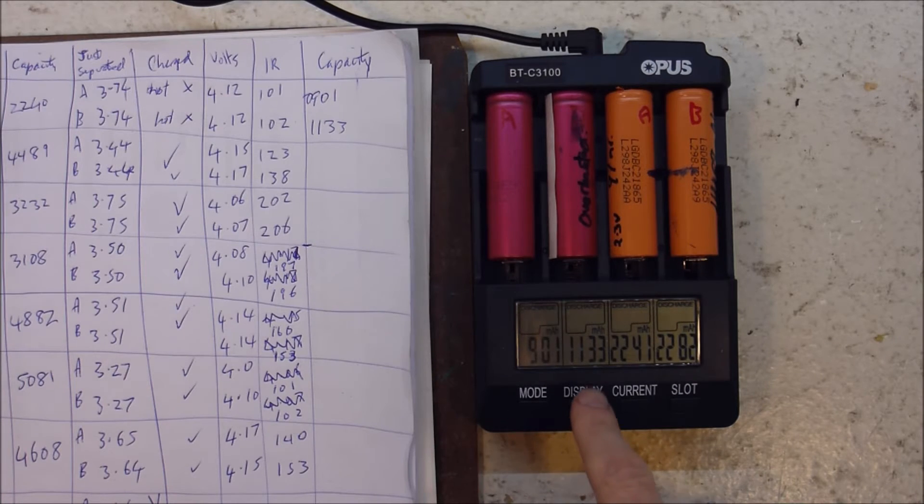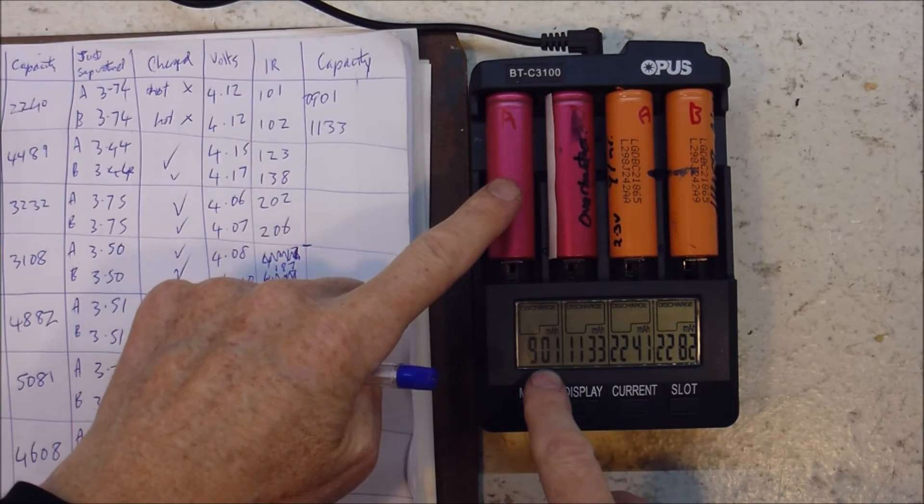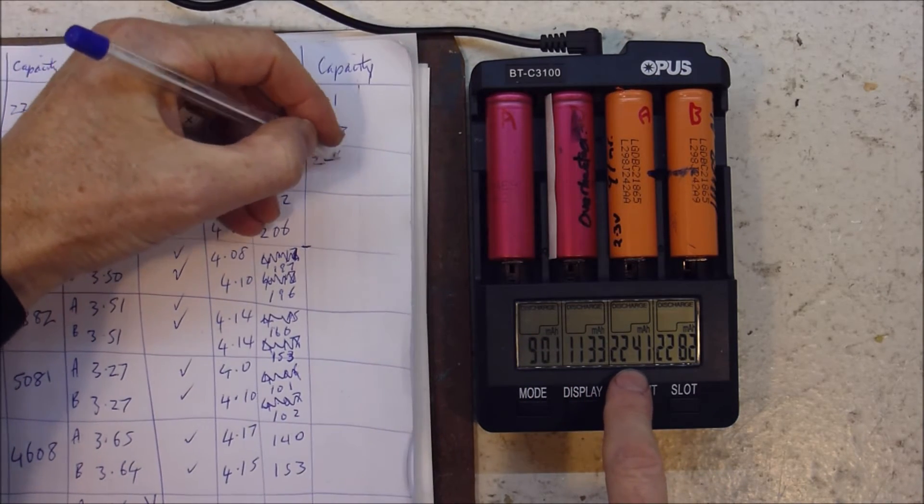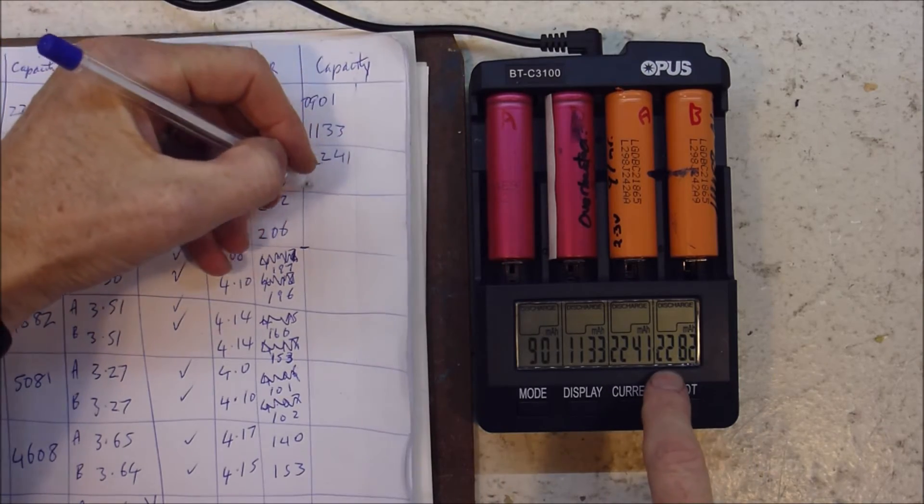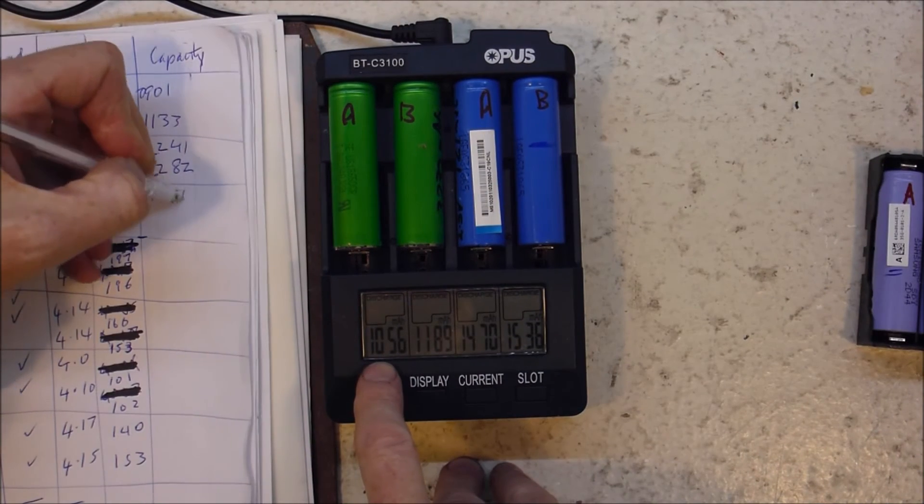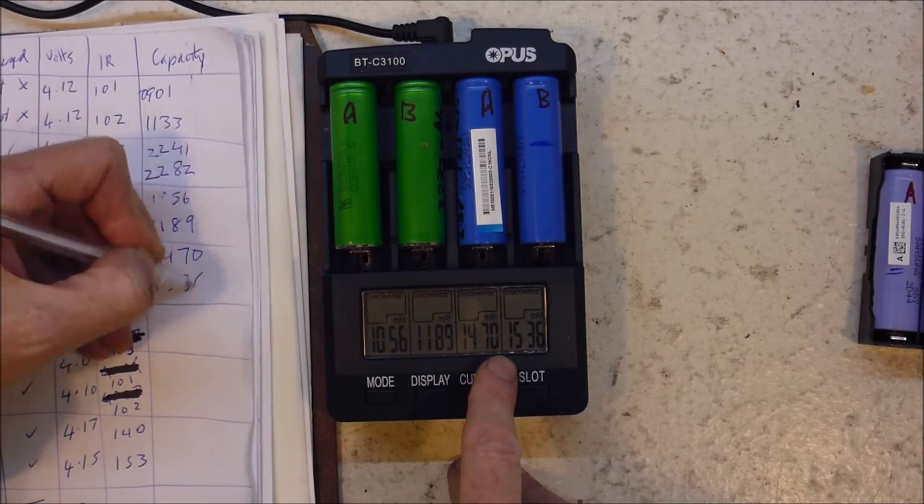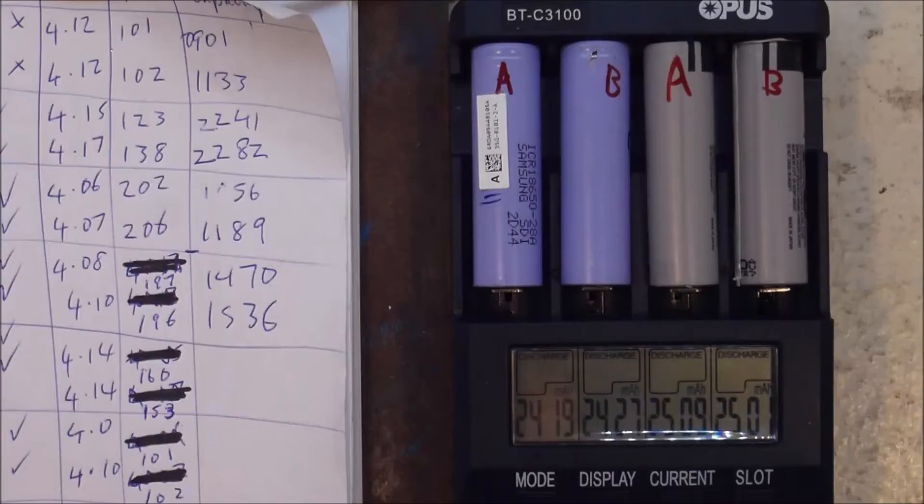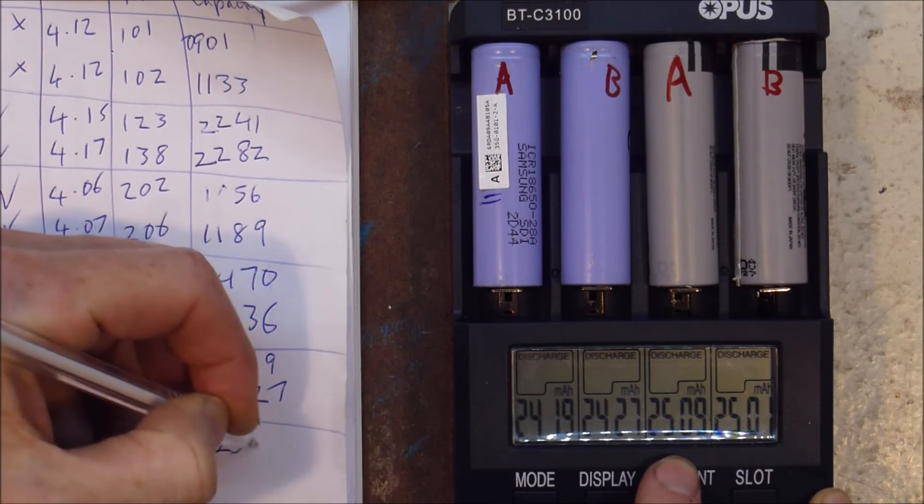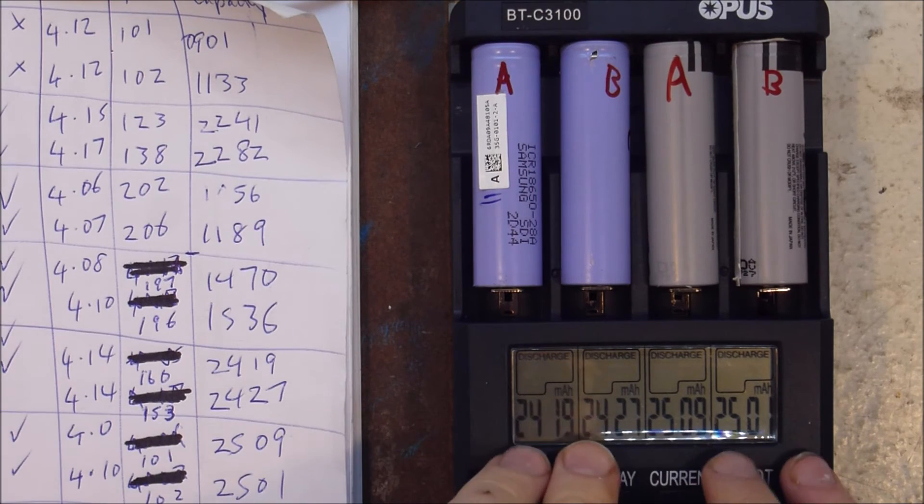First batch have been discharged and the capacity is 901, 1133, 2241, 2282. 1056, 1189, 1470, 1536. 2419, 2427, 2509, 2501. Remarkably similar.